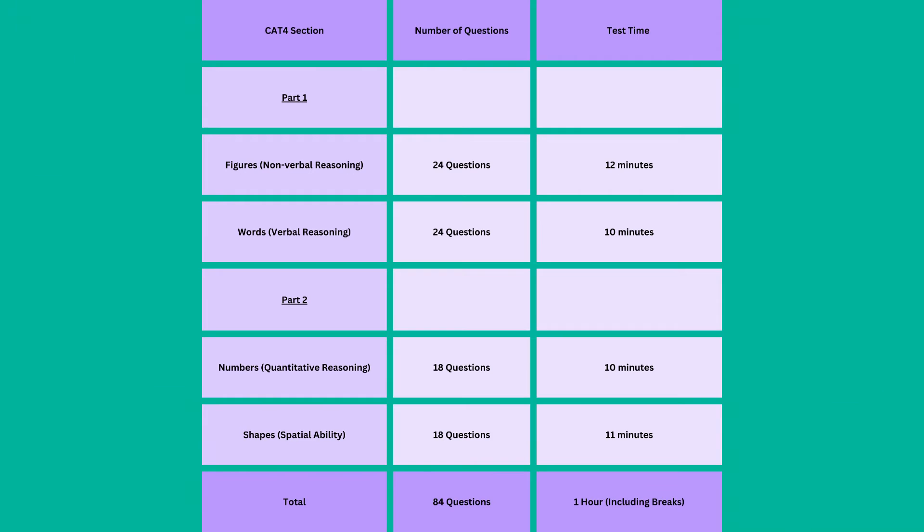The CAT4 Level Y has two parts, and each part is divided into two sections. Each section has specific time limits and amount of questions, as you can see in this table. Now, let's answer several sample questions together so that you get a feel for the actual test.